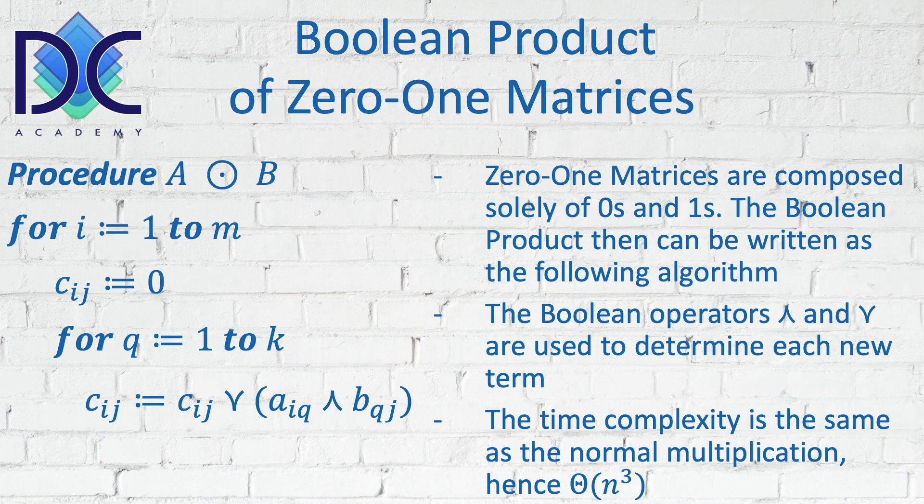We have to OR, add OR Aiq and Bqj. So we have here the plus, which is replaced by the OR, and the multiplication with the AND operators.